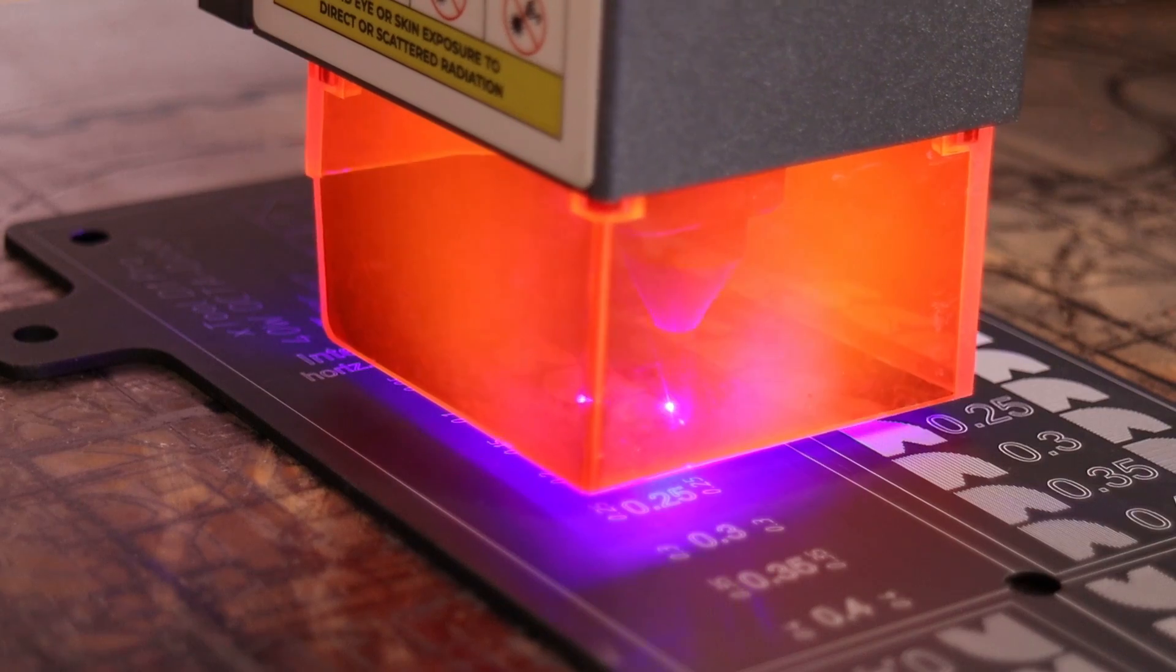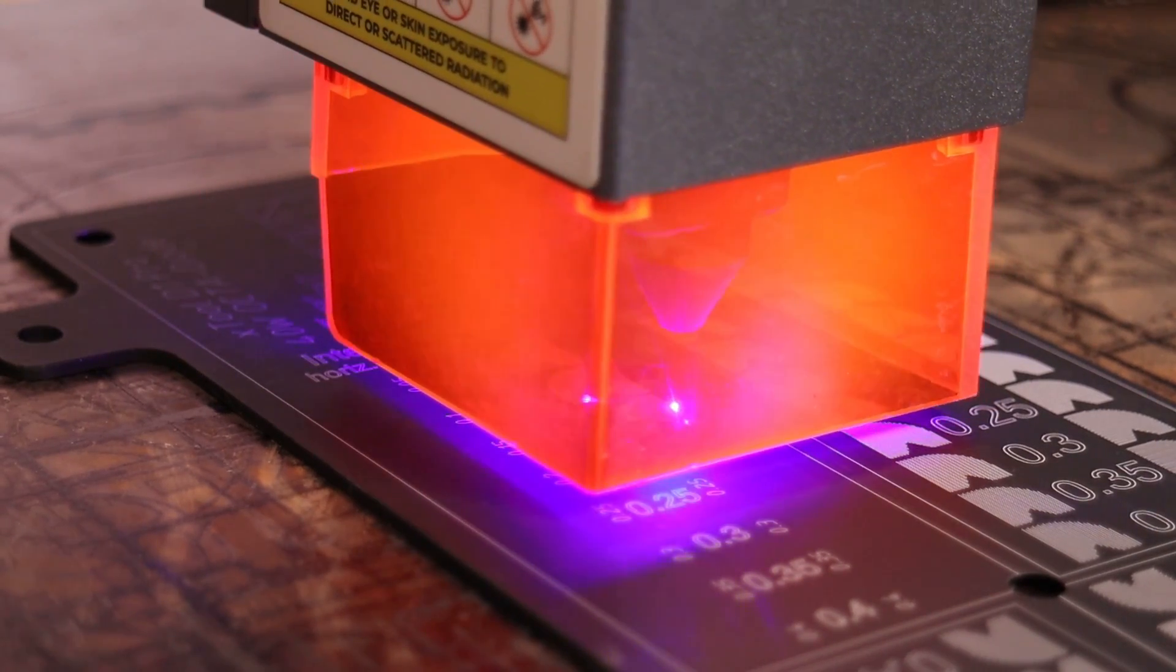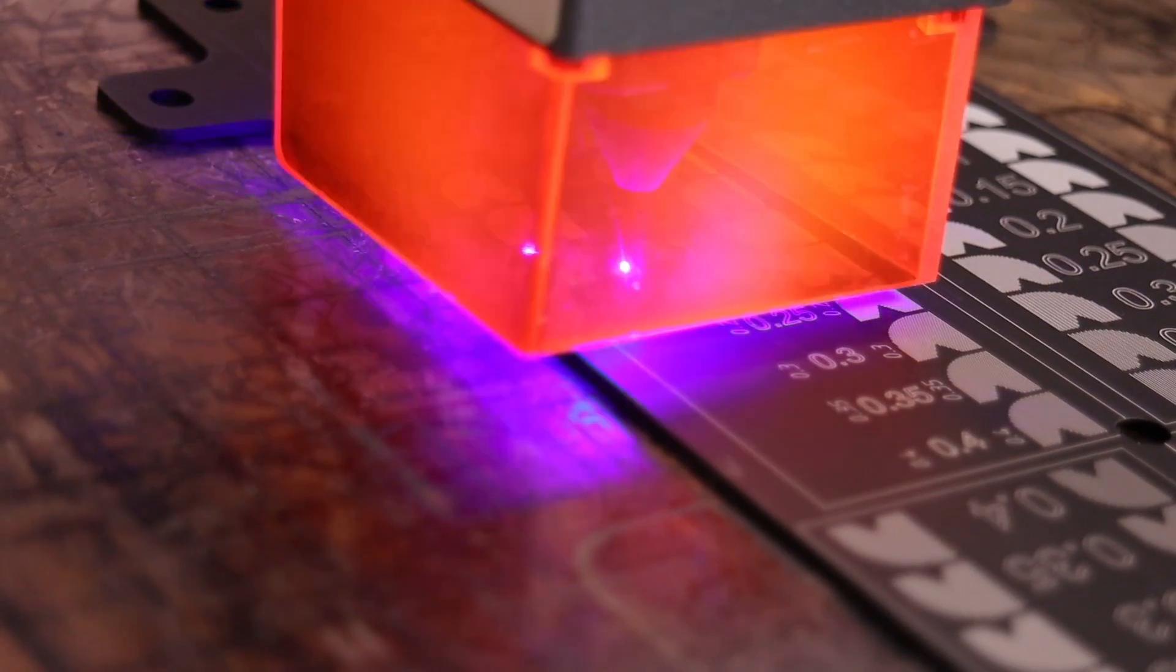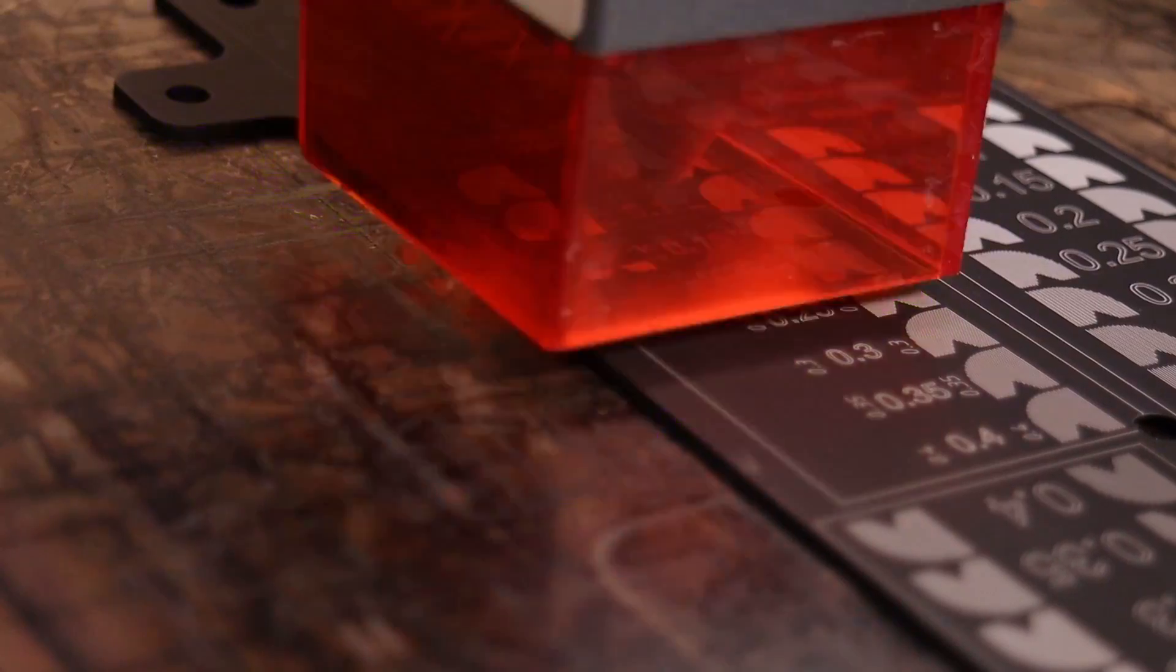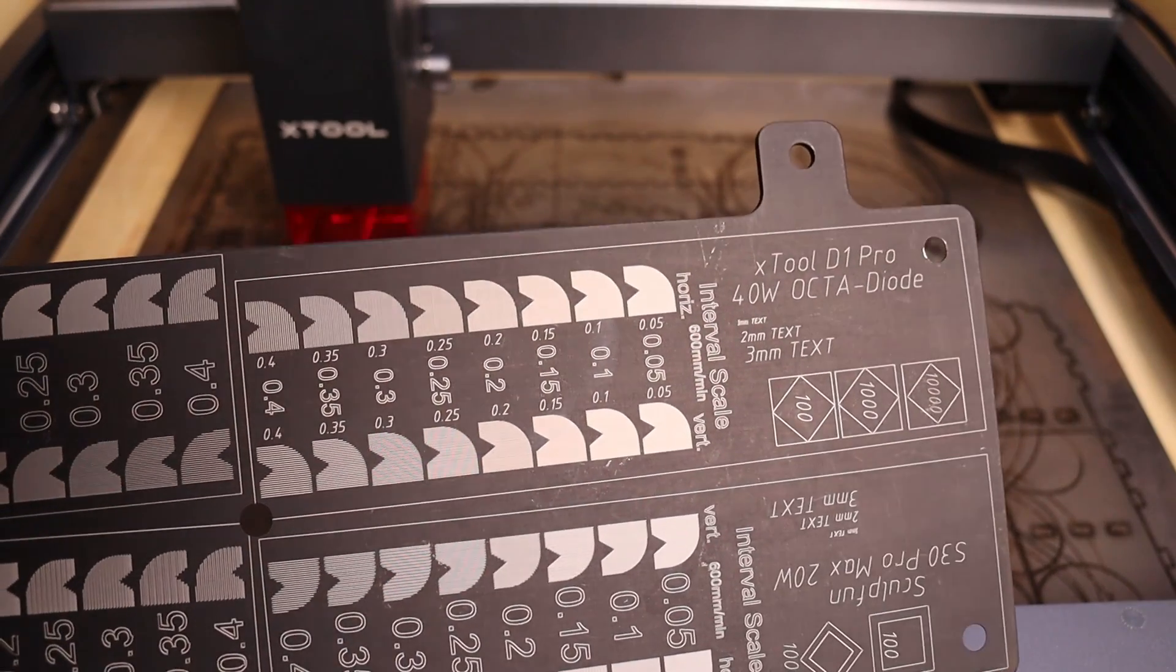The main feature of this test is the interval test in vertical and horizontal direction to see if the laser spot is rectangular or square shaped. Let's see the details with a microscope.